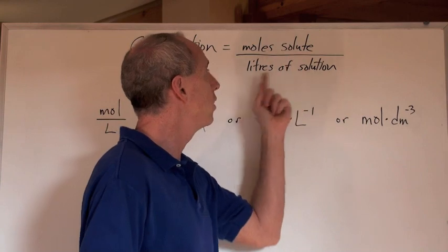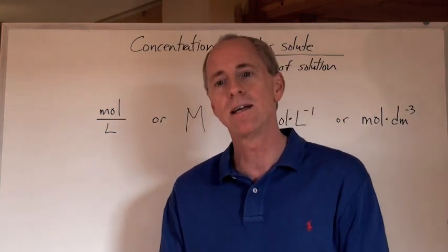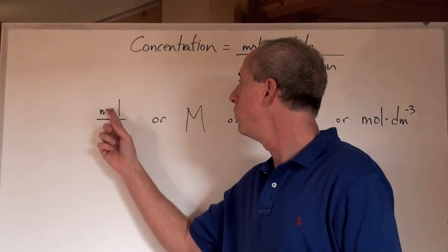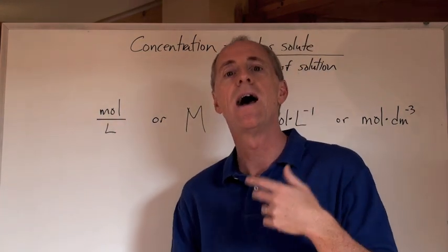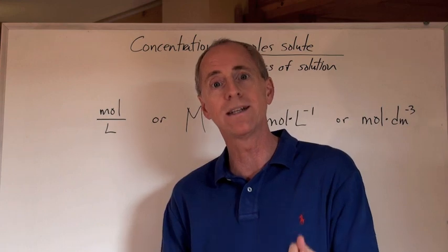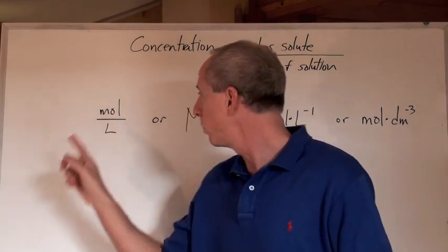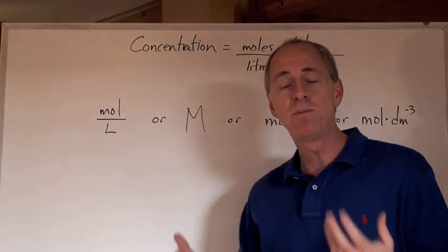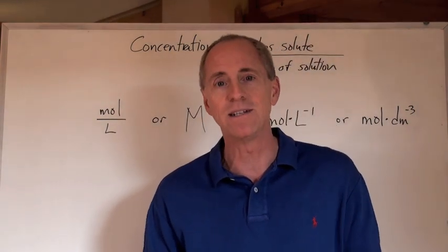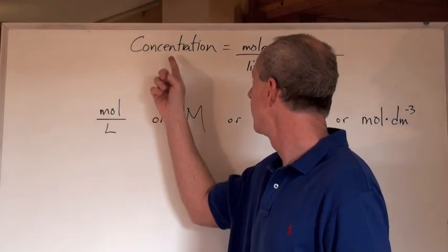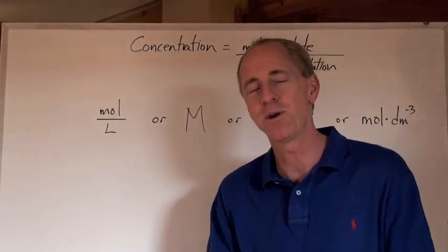Moles of solute divided by liters of solution — how do we abbreviate that? We use moles per liter. How many moles do we have over one liter of that solution? You're also going to see moles per liter written as big M, because big M is molarity, and molarity means concentration. So this concentration is moles per liter — that's molarity.